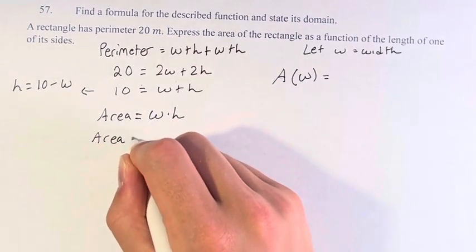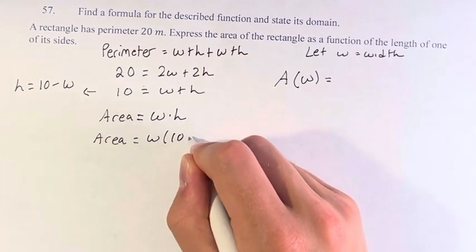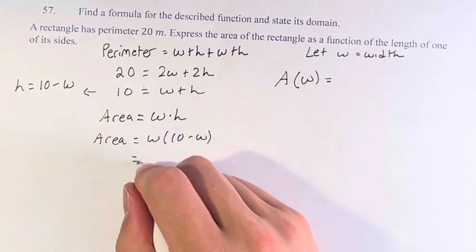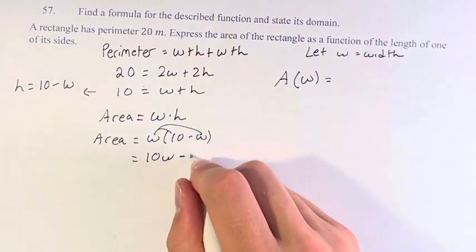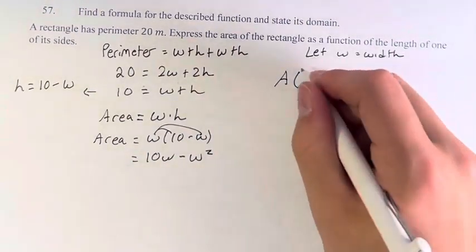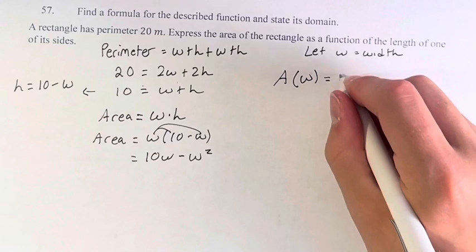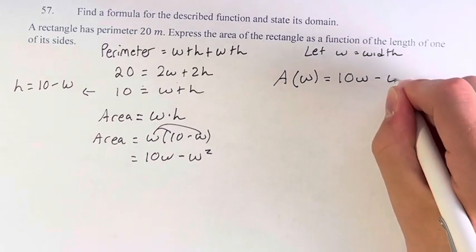So therefore, the area is now w times 10 minus w. This is equal to w times 10, which is 10w, minus w times w, minus w squared. Therefore, A of w, this function, is 10w minus w squared.